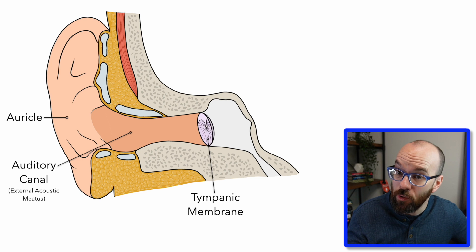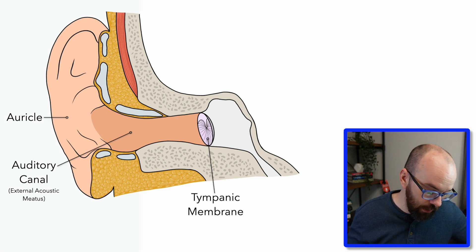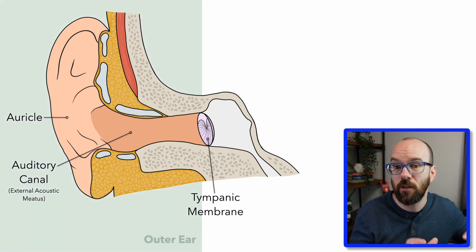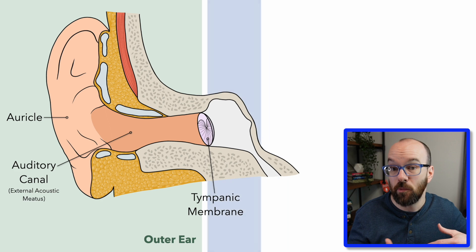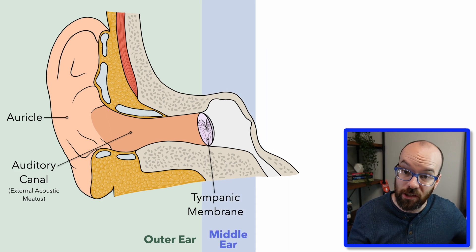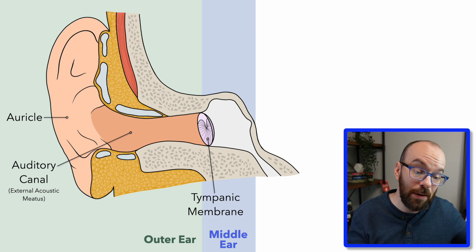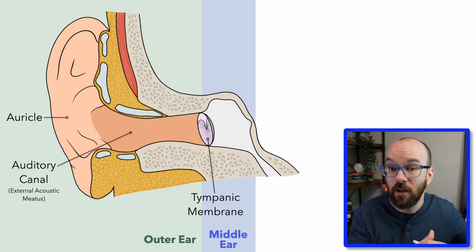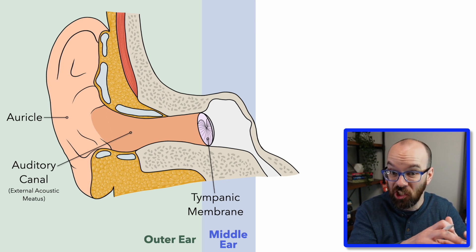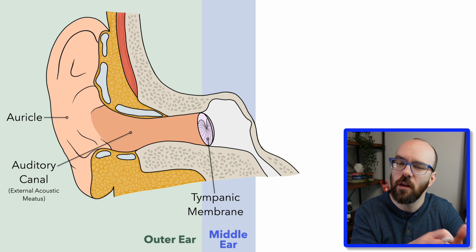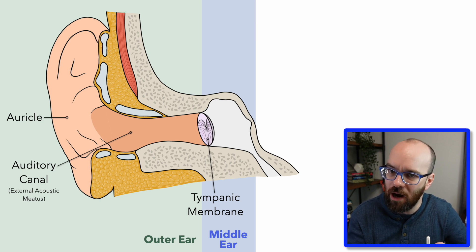The tympanic membrane, or eardrum, is the dividing line between what we call the outer ear and the middle ear. There's also an inner ear past the middle ear. No air is able to pass between the outer ear and the middle ear through the tympanic membrane — it seals off that connection between the two, and that can cause problems.